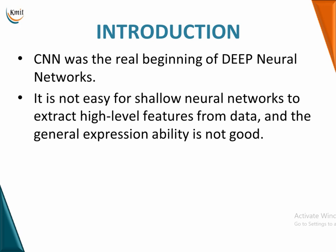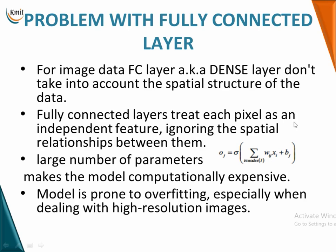CNN was exactly the real beginning of the deep neural network era. So what was the problem with MLP, our fully connected layers? When working with image data, a fully connected layer — also known as a dense layer — does not take into account the spatial structure of the data. An image is like a grid structure.